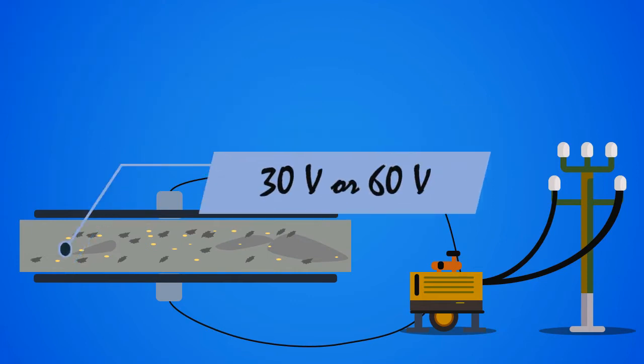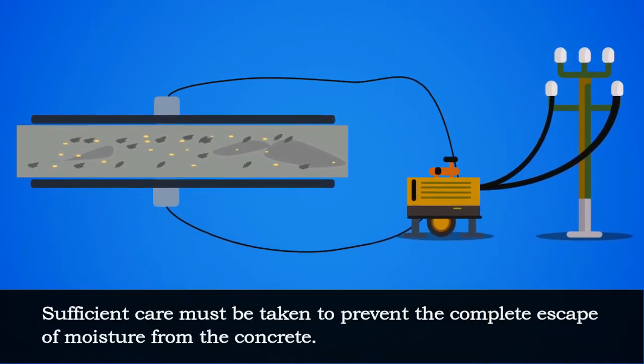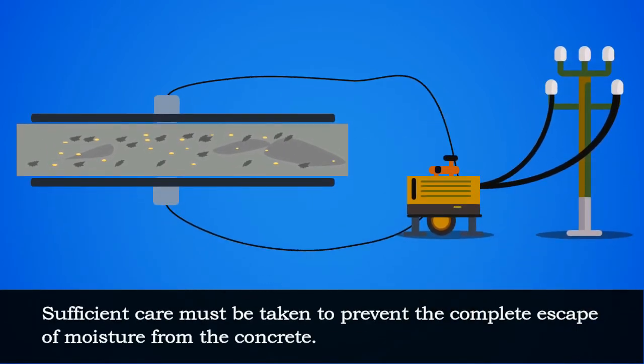The potential difference between the plates is maintained as 30V or 60V. Sufficient care must be taken to prevent the complete escape of moisture from the concrete.